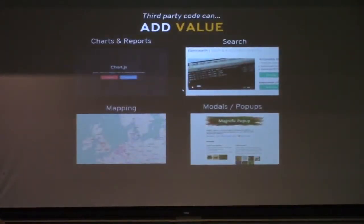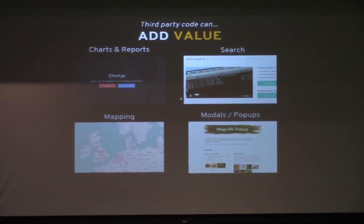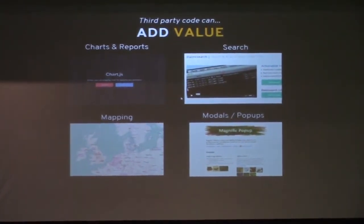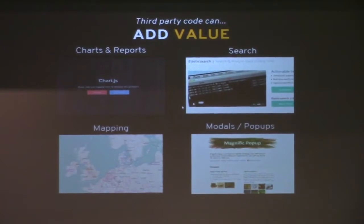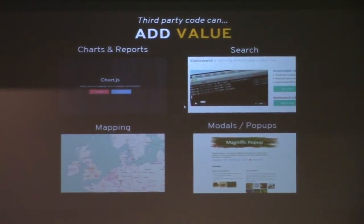Third-party code can add a lot of value to your software. For instance, charts and reports, search — Elasticsearch is something you're seeing come more and more into the WordPress world. Mapping: there's Google Maps, there's Leaflet, there's OpenStreetMaps — lots of different options for mapping. And of course, modals and pop-ups. These are just a few examples.